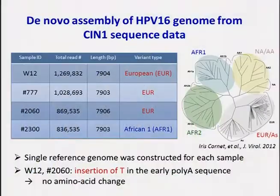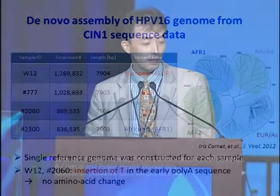This is a result of the clinical samples. So far, six major variants have been identified for HPV-16. We obtained two European types and one African type as a single reference sequence for each sample. The differences in genome length are due to insertion of T in the poly-A sequence.